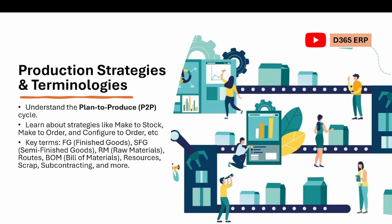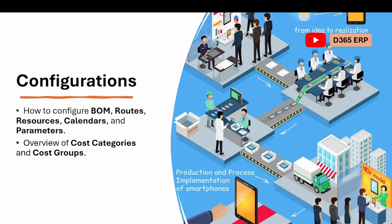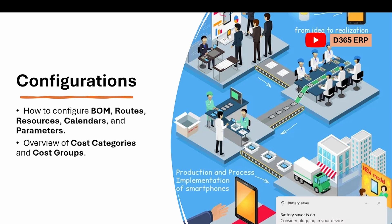We will discuss key terminologies you need to know before going to advanced topics, such as FG (finished goods), SFG (semi-finished goods), raw materials, route, BOM (Bill of Material), resources, scrap, subcontracting, and more. After covering all key terminologies, we will start with configuration. Before configuring in Dynamics, we will first cover the basics like BOM, route, resource, calendar, and production parameters.